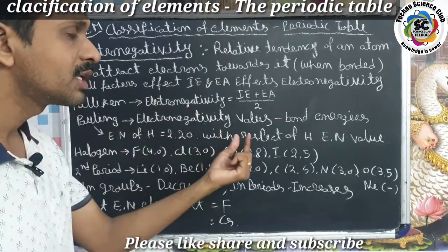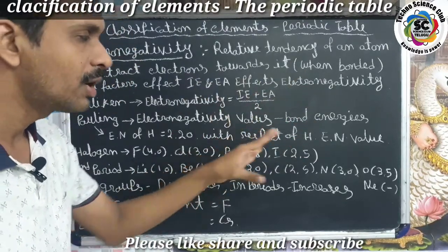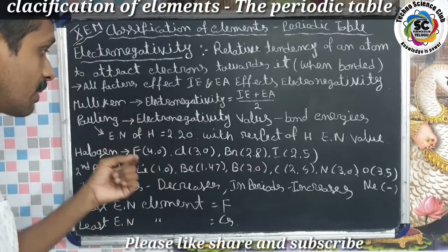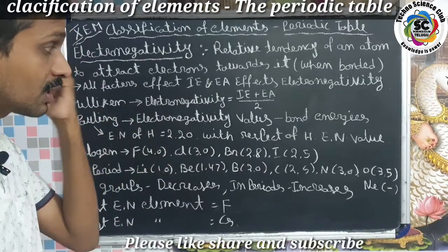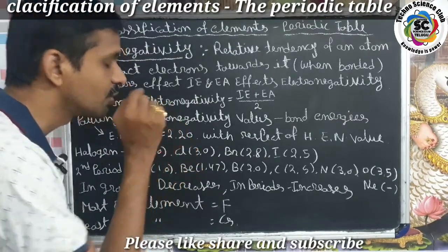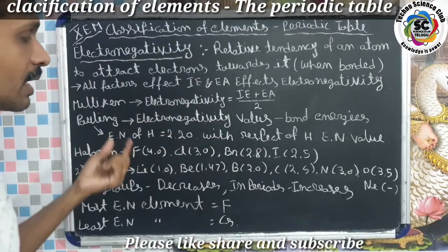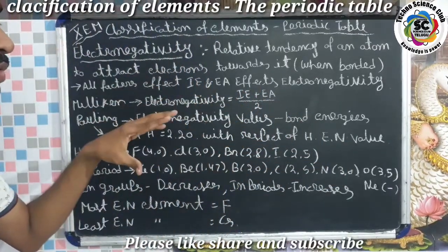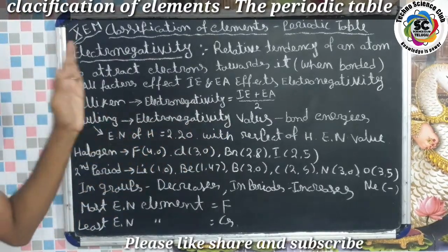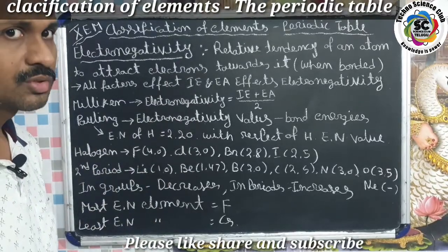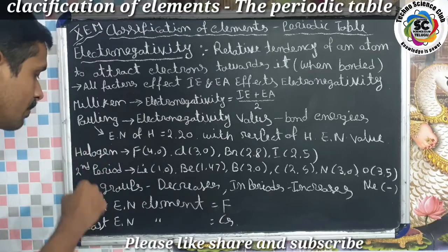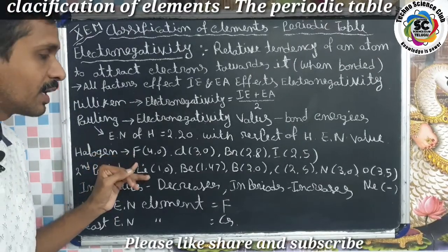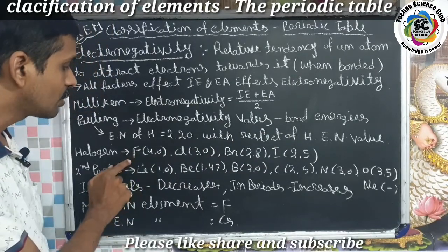Scientist Pauling described electronegativity values based on bond energies. Pauling set the electronegativity value of hydrogen as 2.20, and using hydrogen as a reference, he described the electronegativity values of all other elements with respect to hydrogen's electronegativity value.